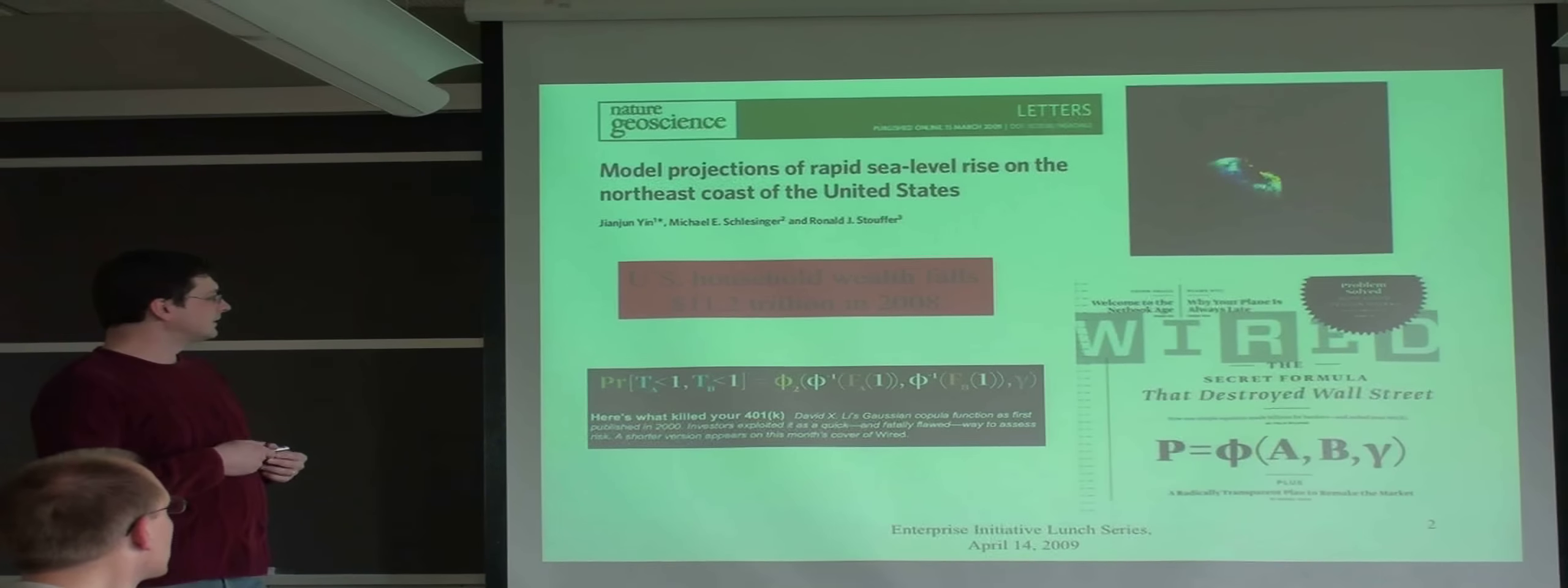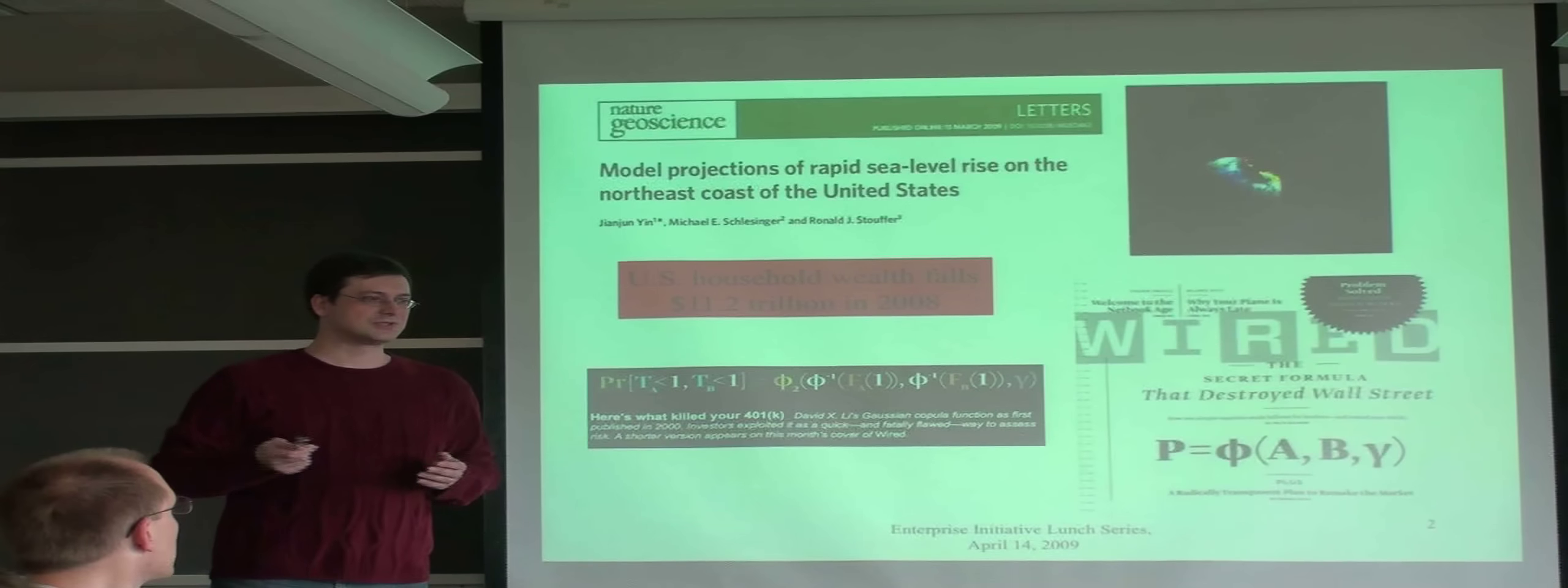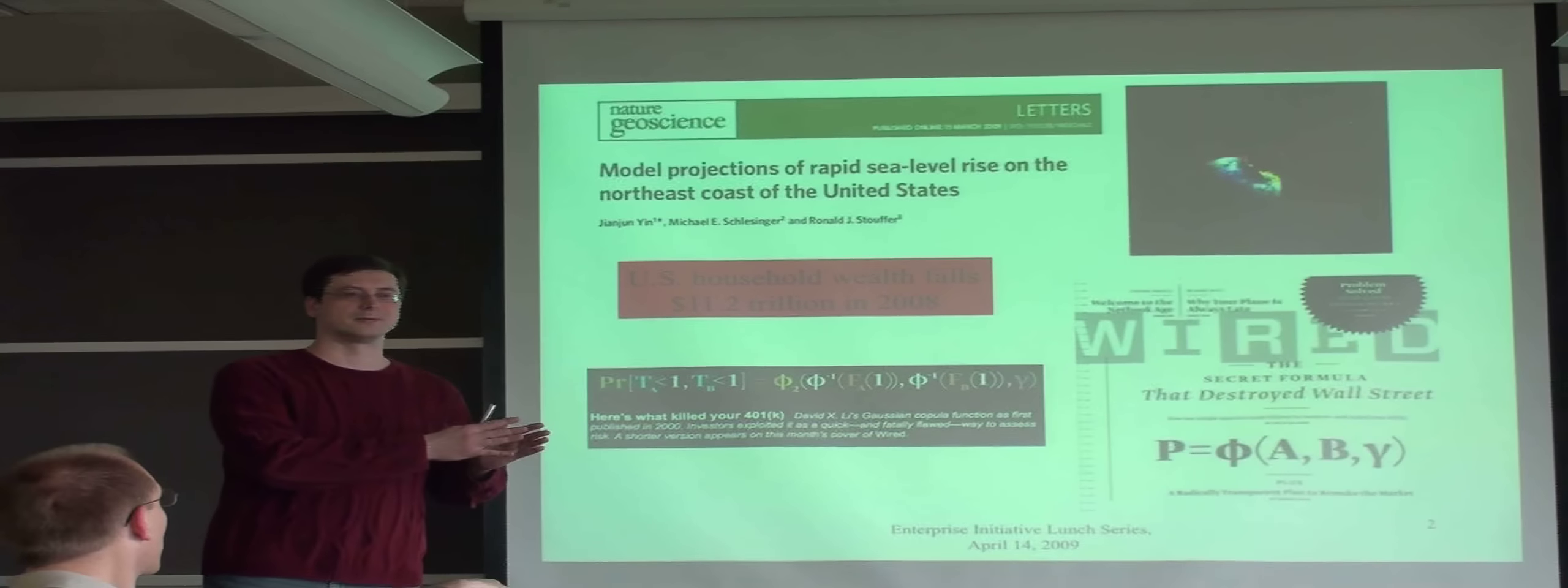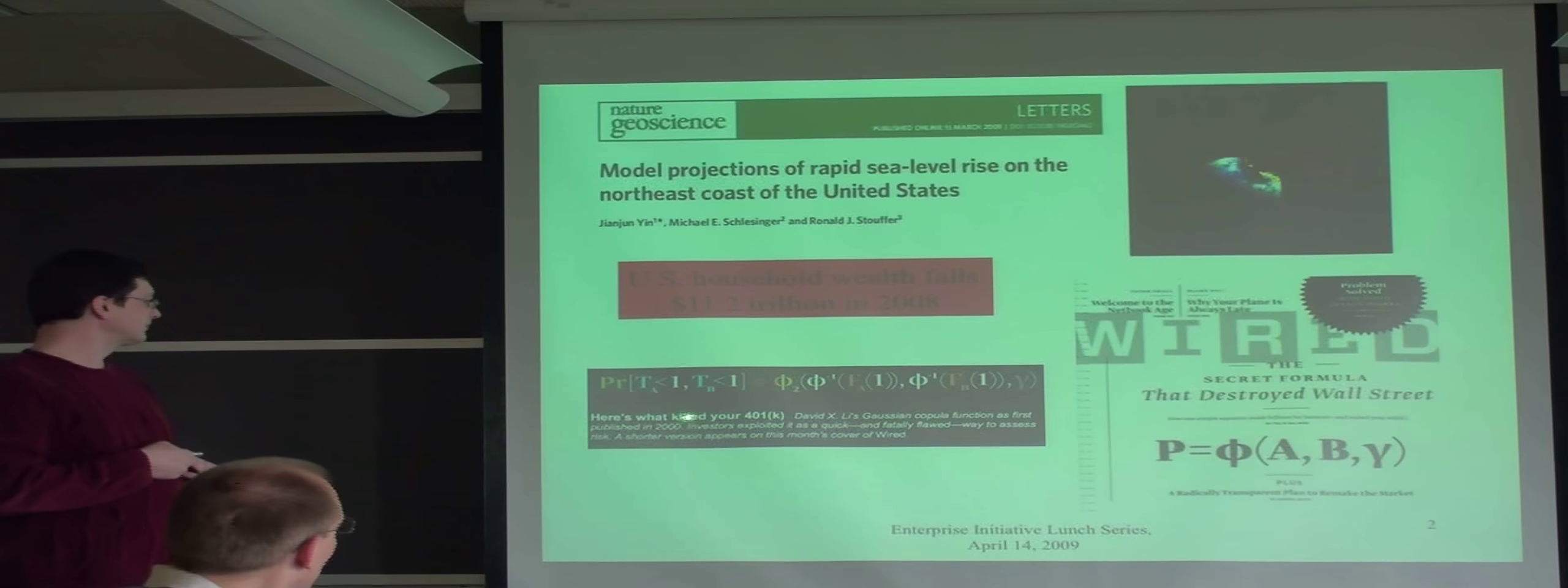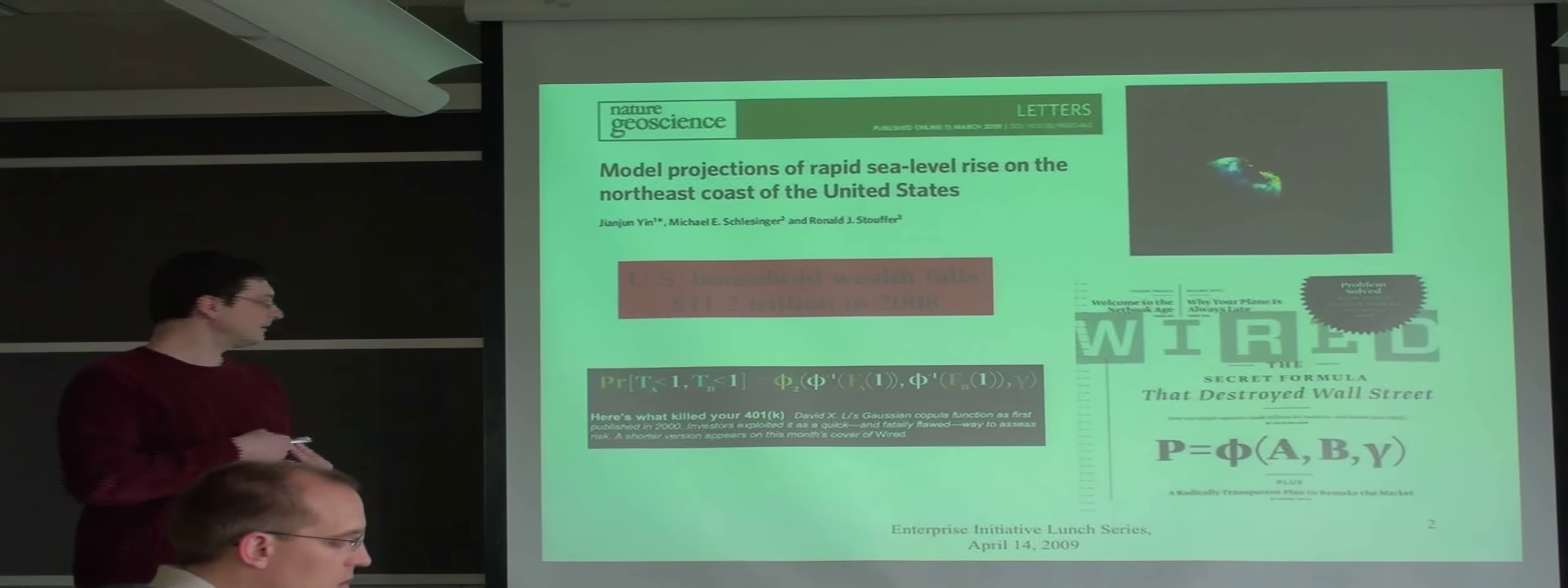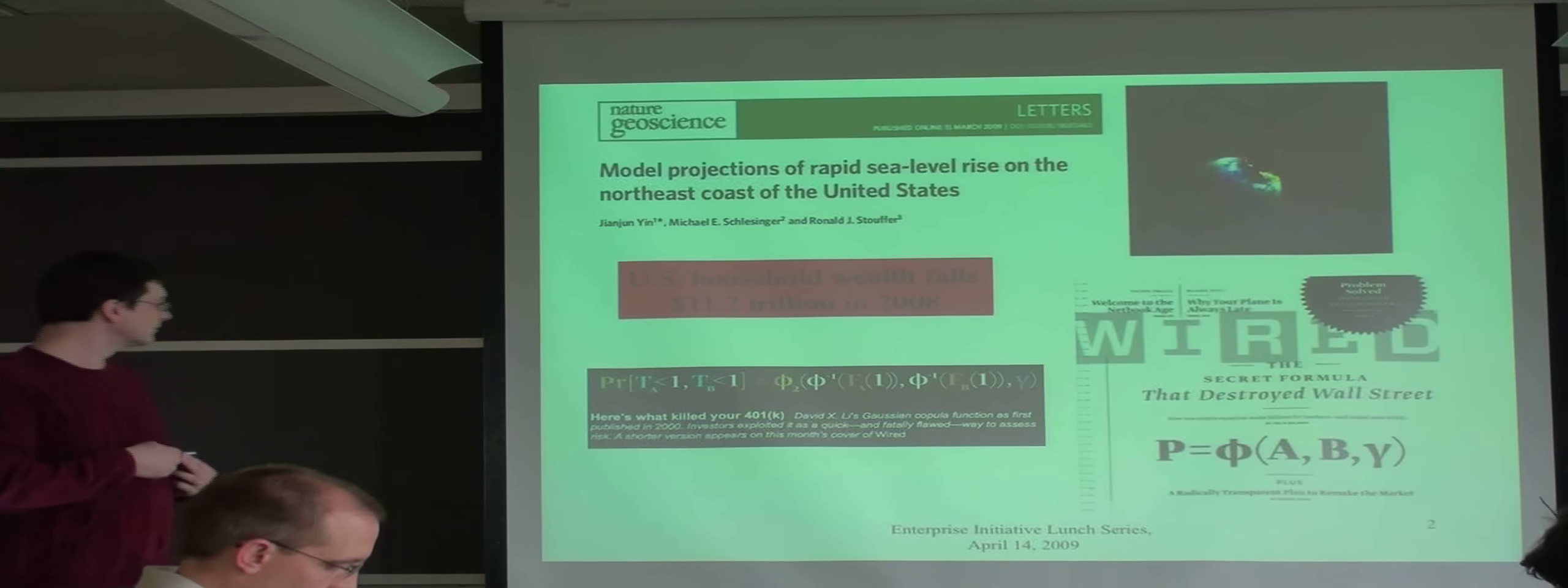Or, the financial crisis. There is still a lot of theories flying around when it really caused this financial crisis. Every academician is pushing his theory because he was studying certain phenomena, and he immediately sees this phenomenon in the financial crisis. And then, of course, you can see these secret formulas that killed Wall Street. For example, here is what killed your 401K. This Chinese guy with a Gaussian copula function.